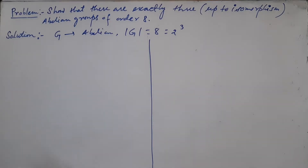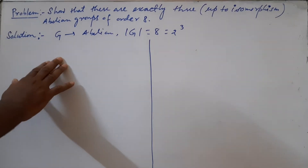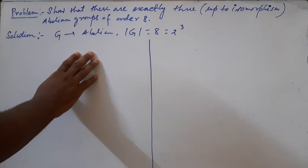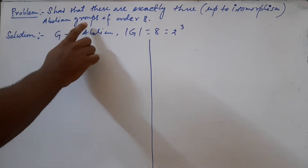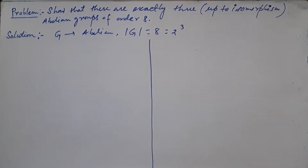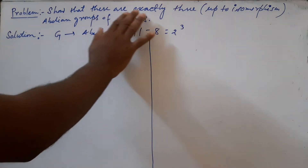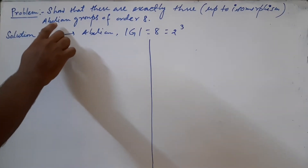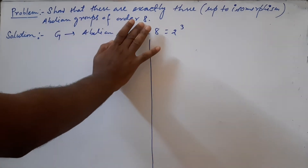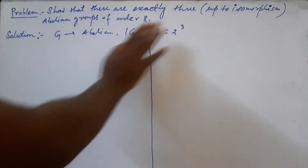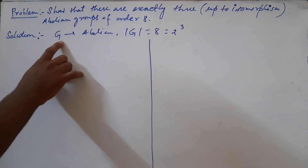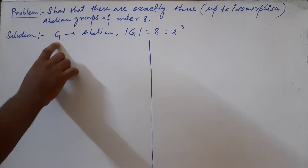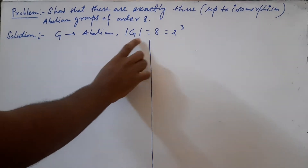Hello friends. Here we discuss one of the most important problems in finite abelian groups. The problem says that we have to show that there are exactly three abelian groups of order 8, up to isomorphism. We start the solution by taking a group G which is abelian and whose order is 8.